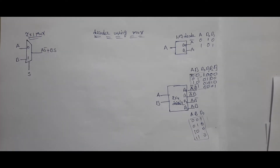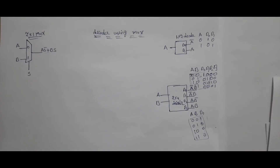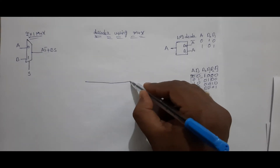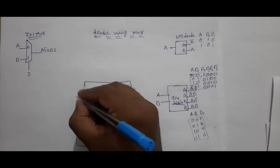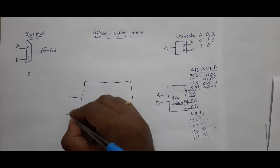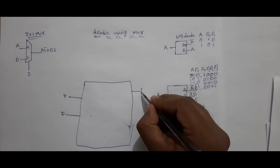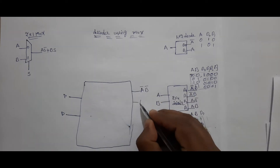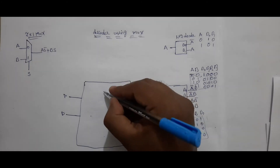Now I am implementing a 2-to-4 decoder using 2x1 MUXes. This is easy to implement but you have to think properly. The 2-to-4 decoder has inputs A and B, and outputs A-bar B-bar, A-bar B, A B-bar, and A B. Inside, I will use only 2x1 MUXes.